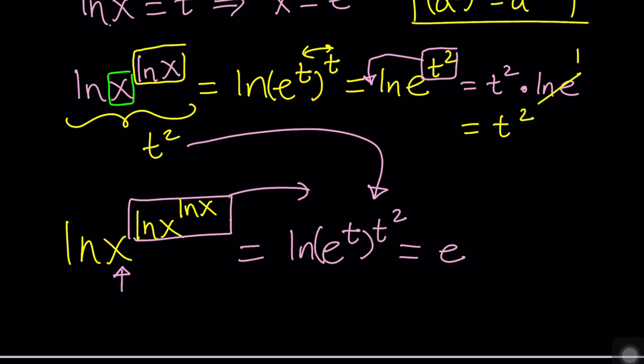But t times t squared is t cubed. So, from here, we get ln(e) to the power t cubed. And again, for the same reason, this is equal to t cubed, because ln(e) is equal to 1. You knew that, right? Okay. Directly follows.